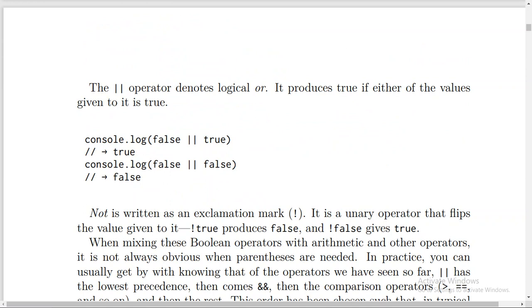The OR operator. It produces true if either of the values given to it is true. Console.log(false || true) will be true result. Console.log(false || false). The result will be false.